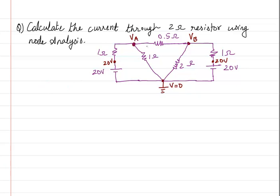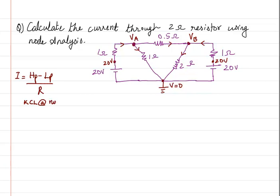So now let us do the problem. We have to first arbitrarily define the direction of current. I am arbitrarily defining the directions — let this one be this way, this one this way, and here I am going to put a direction like this. Any direction — your choice. Once we have put the directions, we will write KCL at node A.